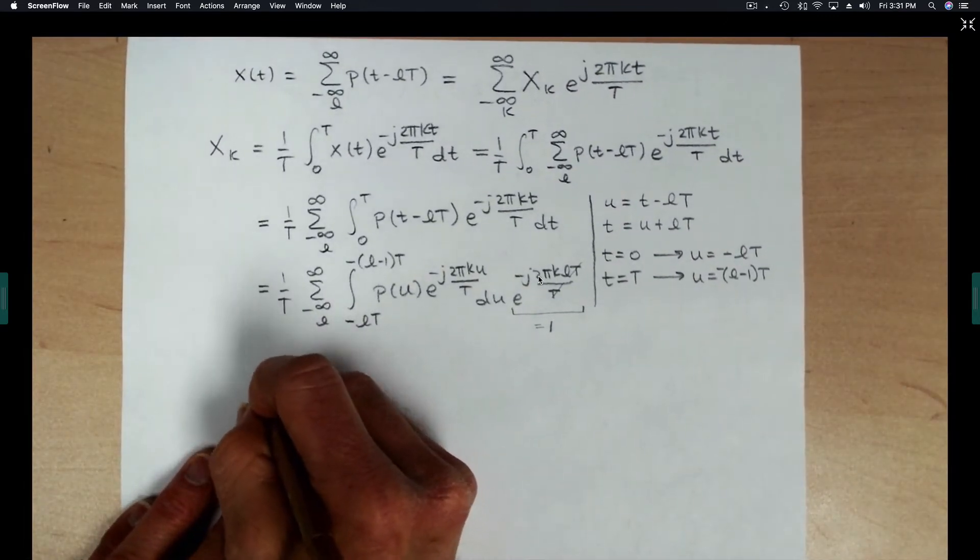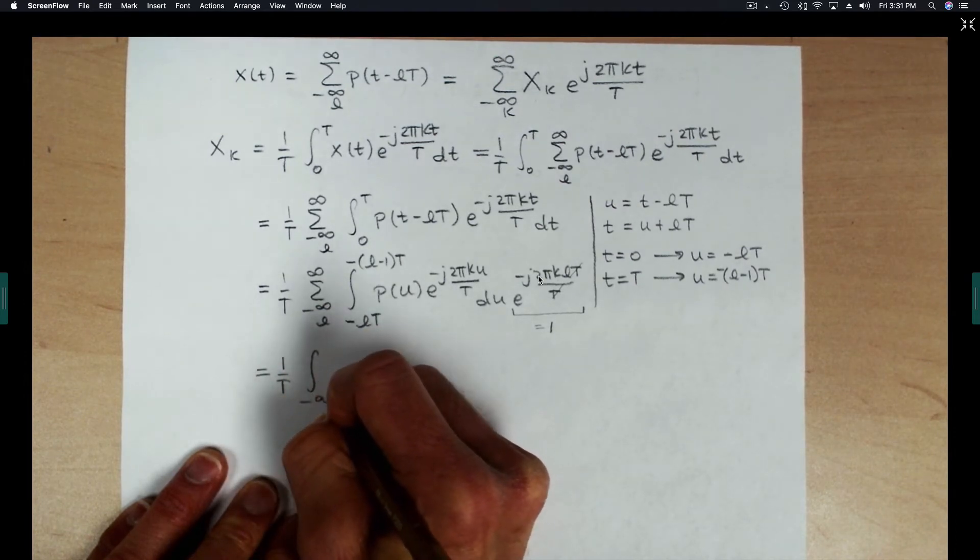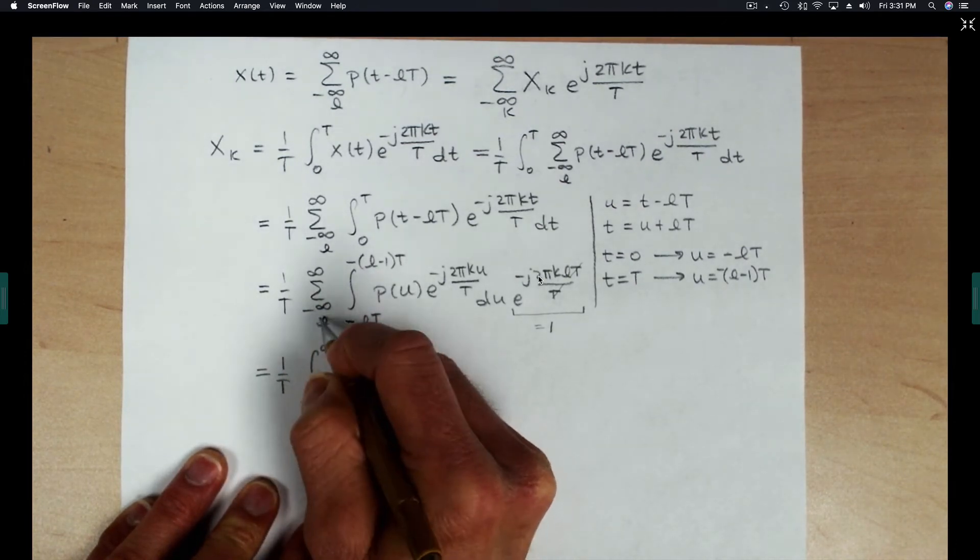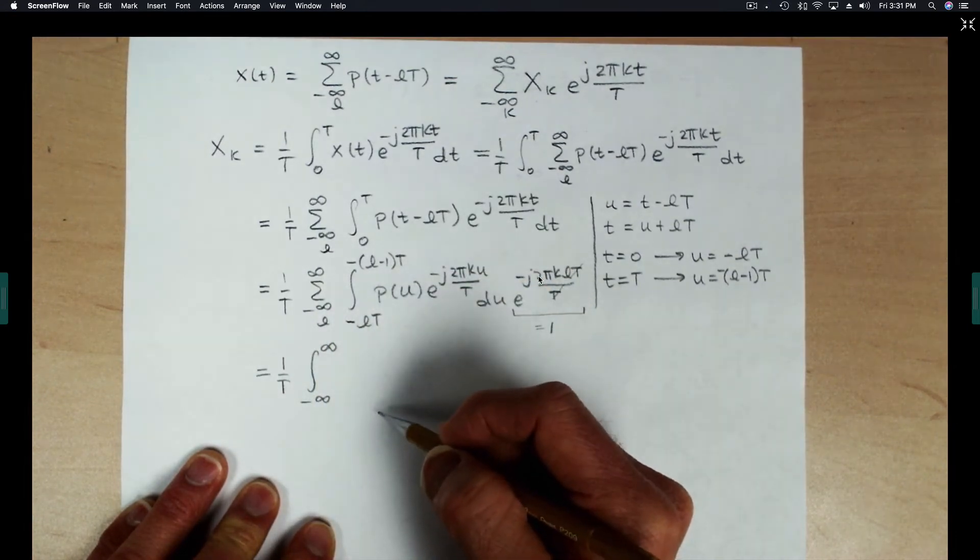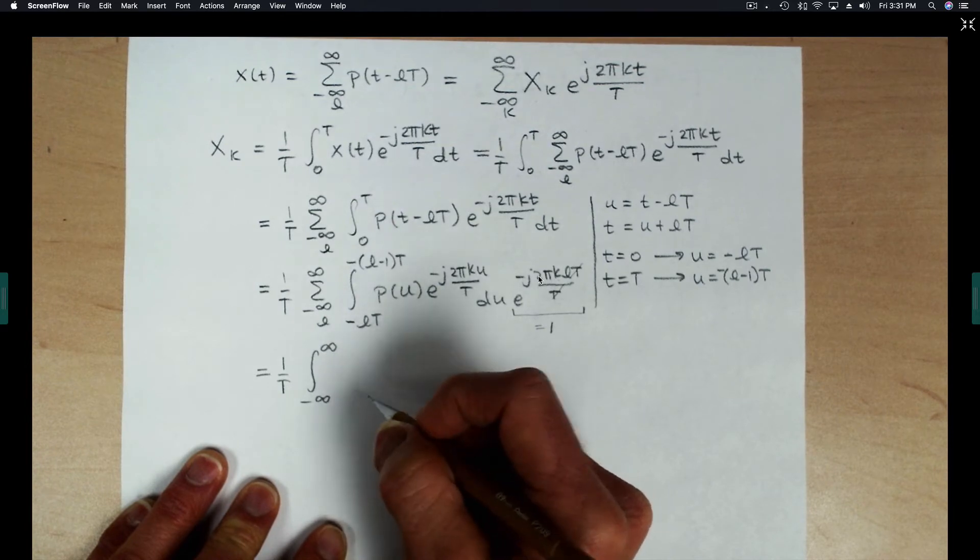So that's what we'll do now, is just write that expression mathematically. We have an integral from minus infinity to infinity. Again, the sum and the finite limits go away and become an integral with infinite limits.